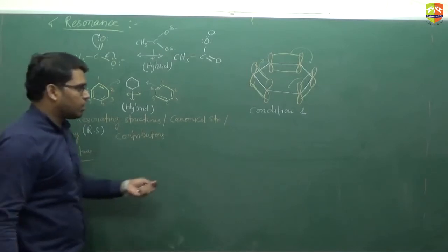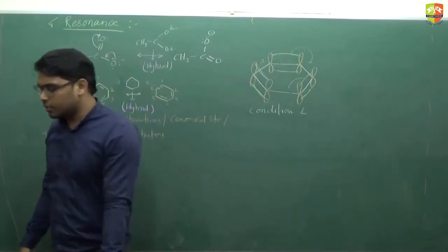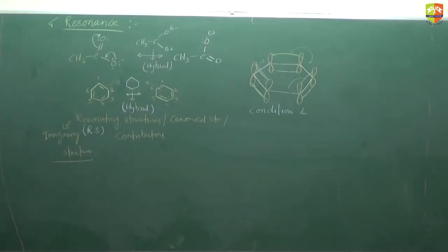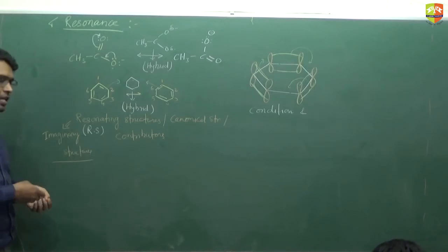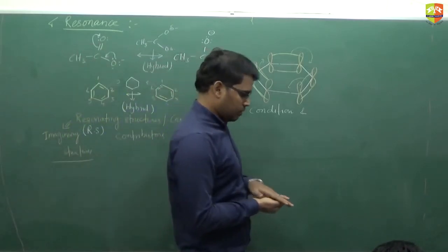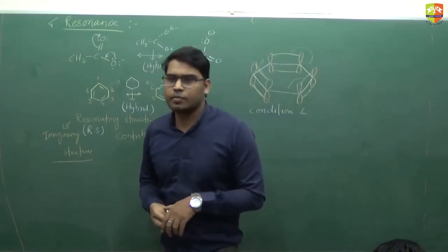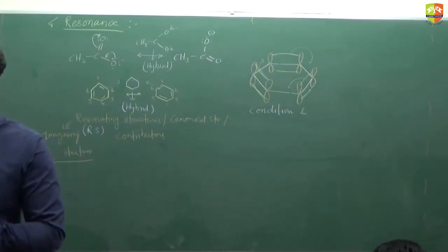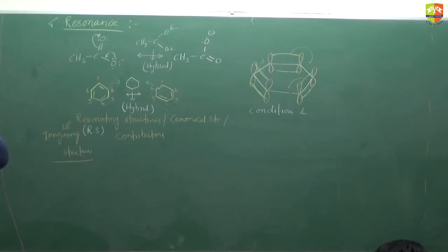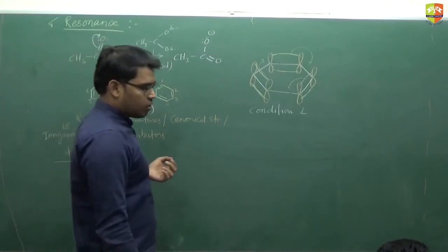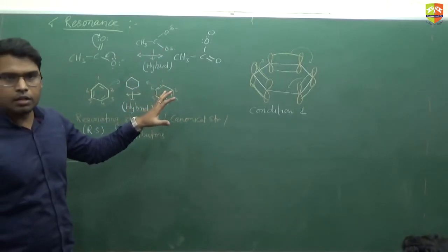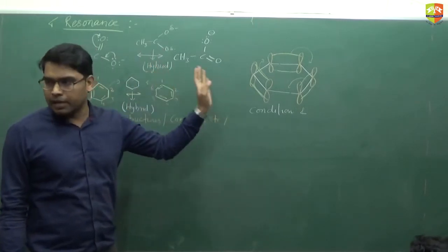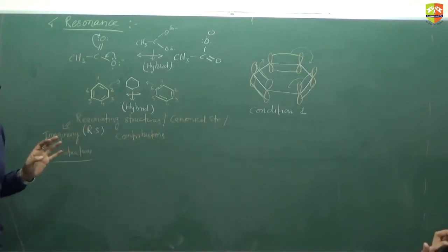First, we write down the conditions and characteristics of resonance. Condition one: the molecule must be planar. Condition two: the position of atoms and sigma electrons are fixed. Sigma electrons do not take part in resonance — it is always pi electrons or lone pairs. In the I-effect, we have sigma electrons, but sigma electrons do not take part in resonance.